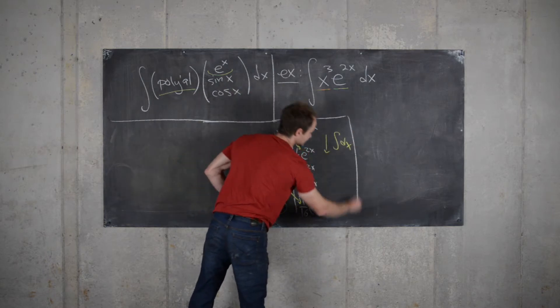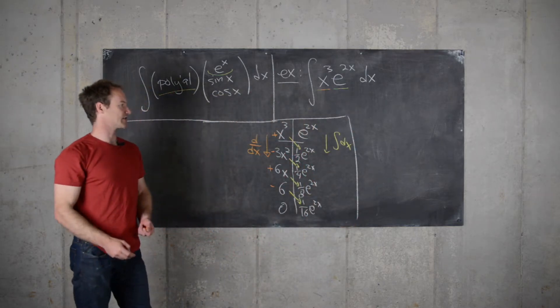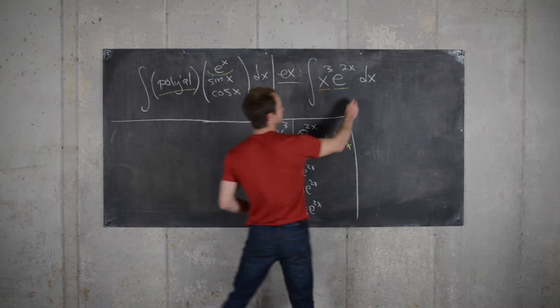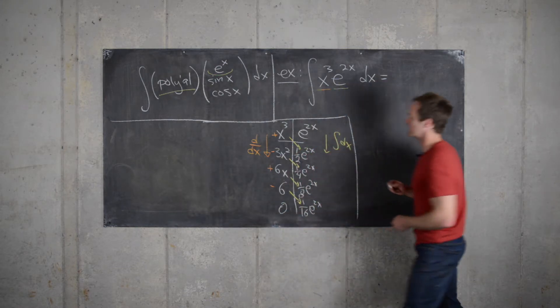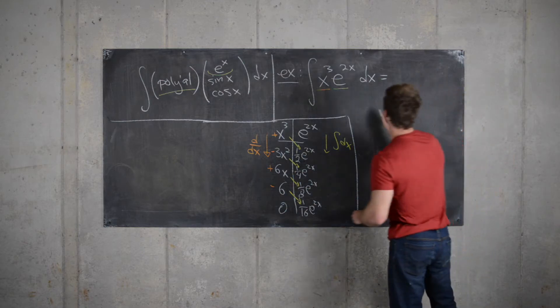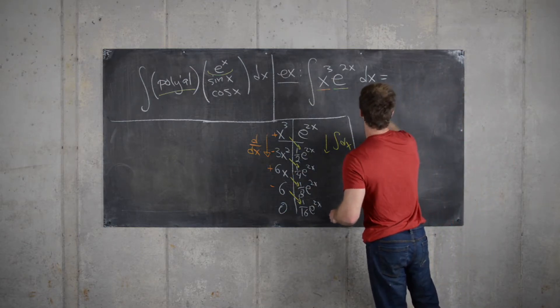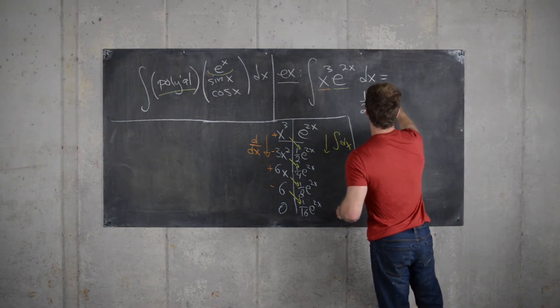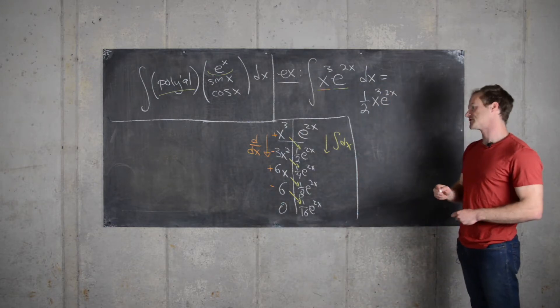And now we can read this table and give ourselves the solution very quickly. That means the anti-derivative of this function will be x cubed times 1 half e to the 2x. So I'll write that as 1 half x cubed e to the 2x and then so on and so forth.